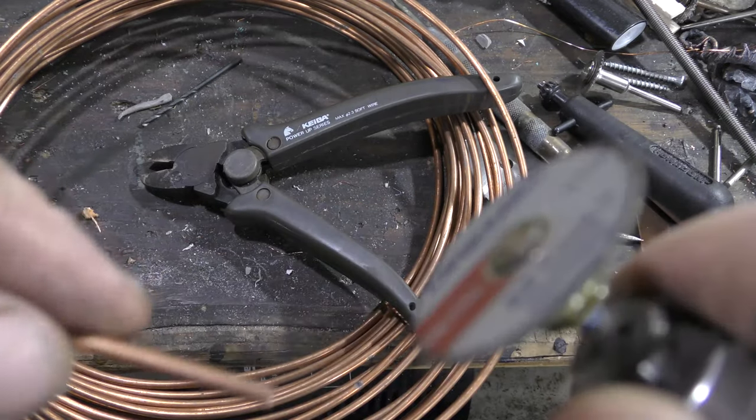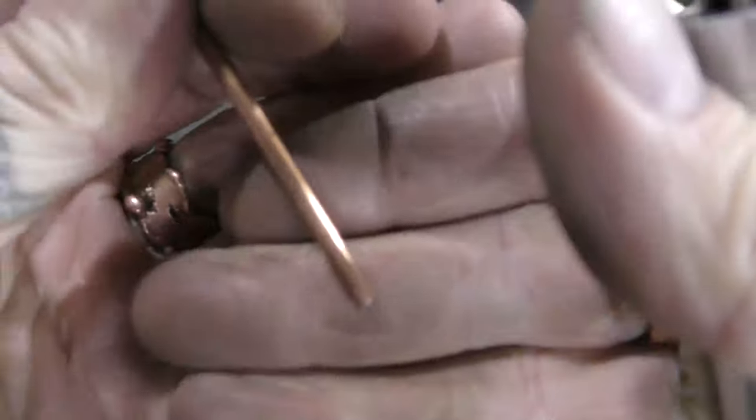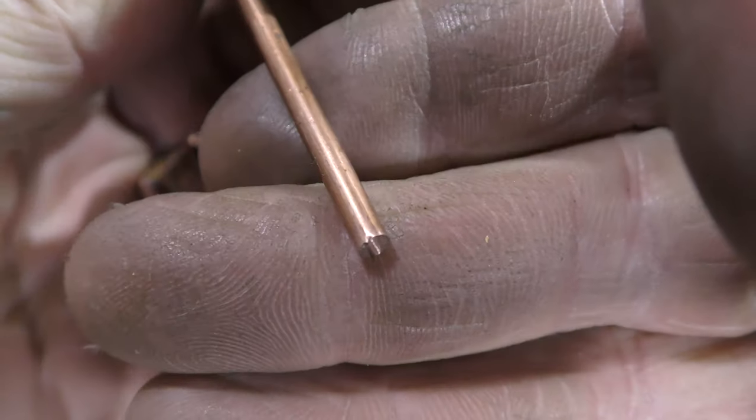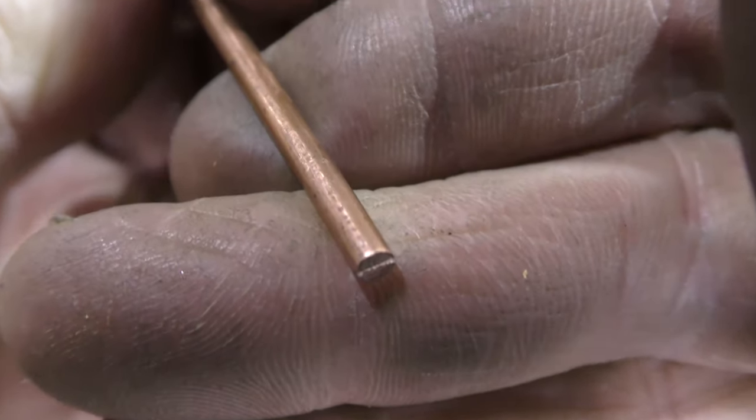Alright, next, I'm just going to flush the ends. You can see this end is kind of flush, but I need it flat. See, it's got a little barb on it.